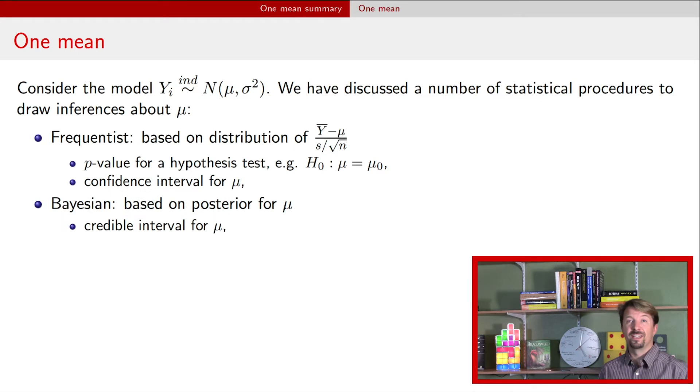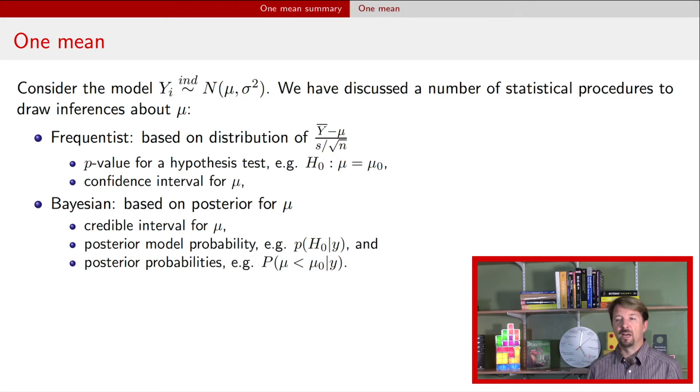If we take a Bayesian approach then we get a posterior distribution for mu. We can get from that posterior expectations or credible intervals. We also talked a bit about how to calculate posterior model probabilities but more importantly perhaps to calculate posterior probabilities of that parameter being say greater than or less than a particular value.